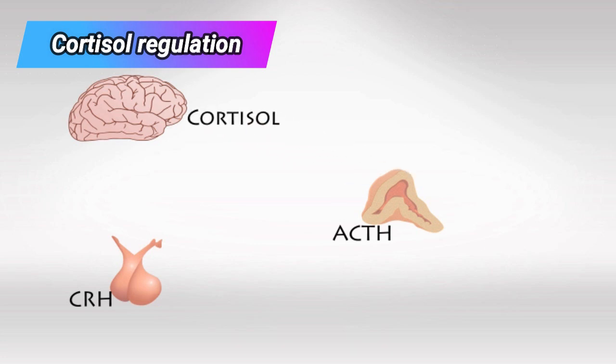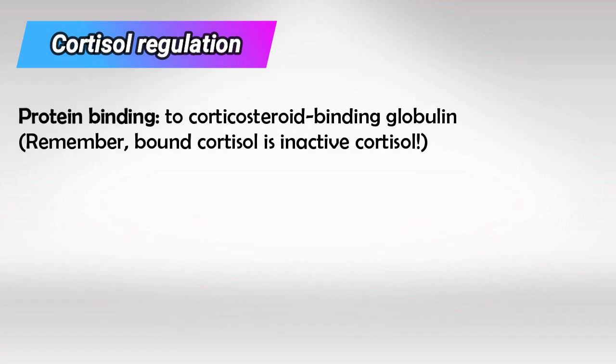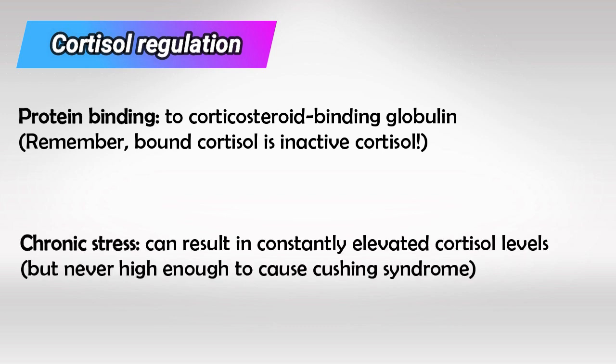Cortisol can travel back to the hypothalamus to cause negative feedback. In the blood, cortisol is bound to cortisol-binding globulin, which inactivates it. Remember that chronic stress can result in chronically elevated levels of cortisol, but never high enough to cause Cushing syndrome.